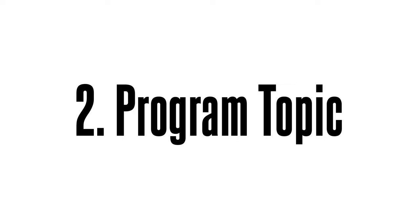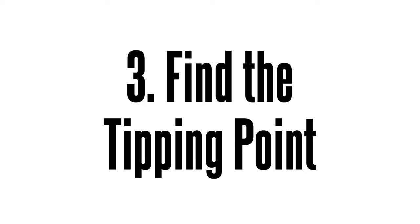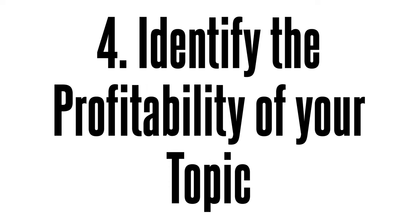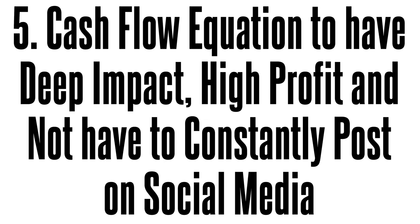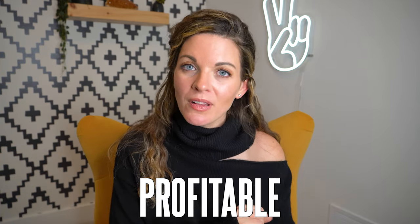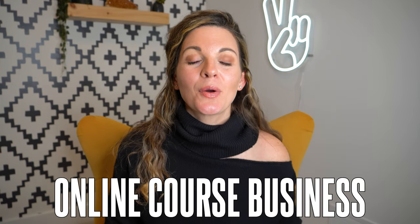The five steps to picking your profitable course topic are: number one, find the need; number two, program topic; number three, find the tipping point; number four, identify the profitability of your topic; and number five, the cash flow equation to have deep impact, high profit, and not have to constantly post on social media. This is the place to build a peaceful, purposeful, and profitable online course business.